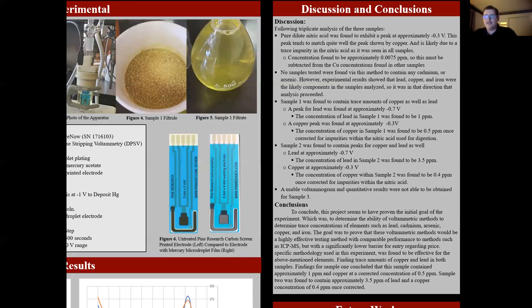Sample two was found to contain peaks of copper and lead as well. Lead at approximately 0.7 volts with a concentration of about 3.5 ppm and copper at approximately negative 0.3 volts. The concentration of copper within sample two was found to be about 0.4 ppm, once corrected for any impurities within the nitric acid.